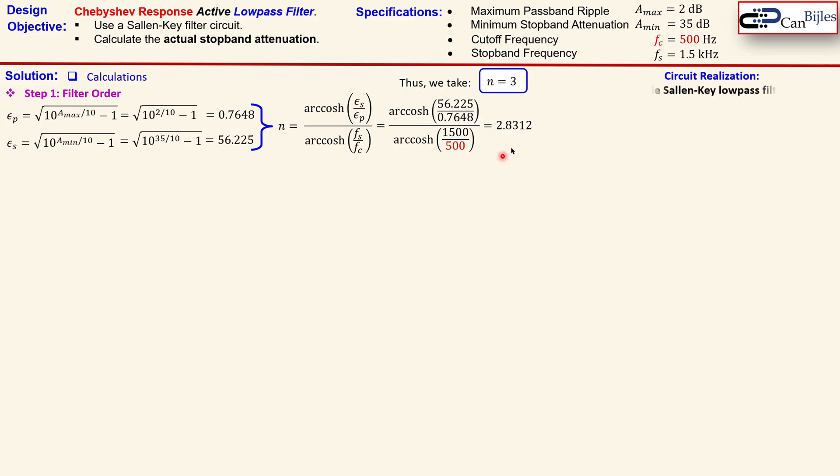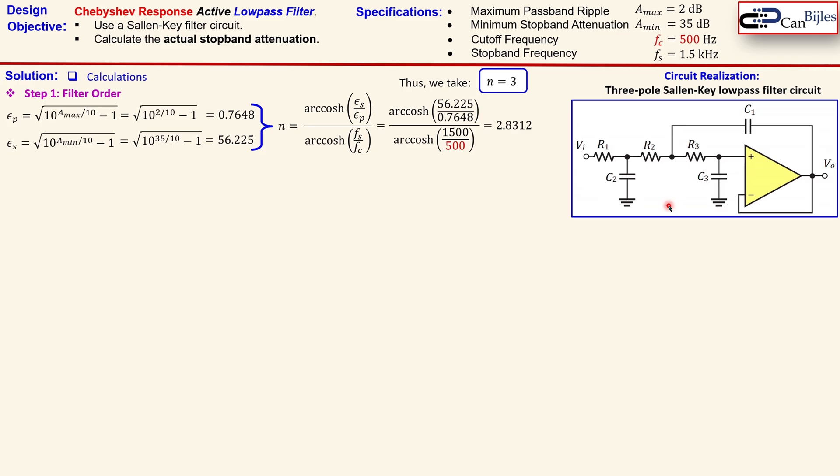That means for our circuit realization, we need to use a 3-pole Sallen-Key low-pass filter circuit, which is actually shown here. So we have here three resistors, R1, R2 and R3.